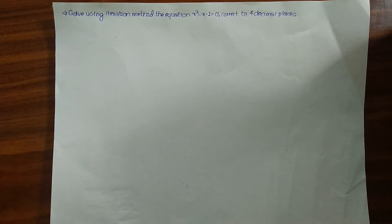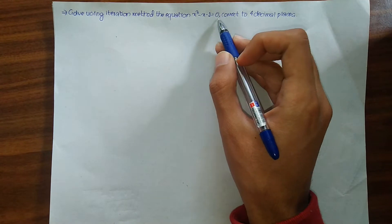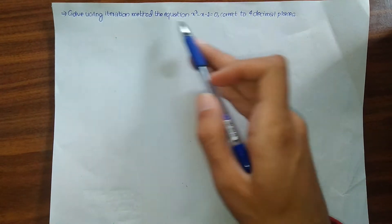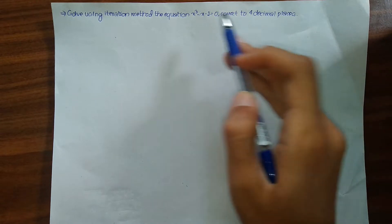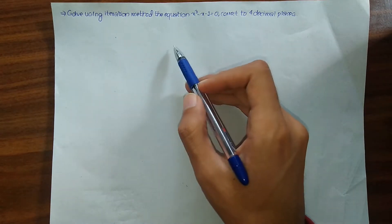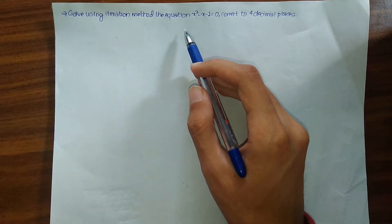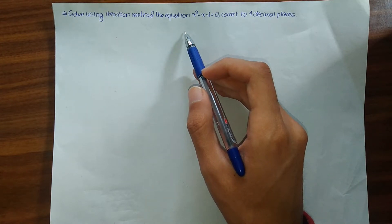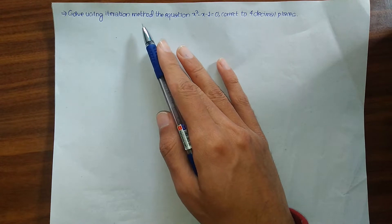Hello online viewers, welcome to our lecture video. In this lecture we will be solving the equation x³ - x - 1 = 0 using the iteration method, and we will find the root of this equation correct to four decimal places. I have already created videos on Newton-Raphson method, bisection method, and false position method, whose links you can find in the description box below. So now let me talk about the iteration method.